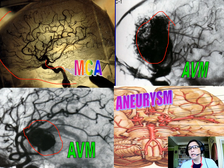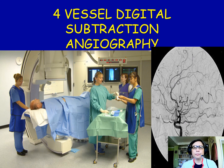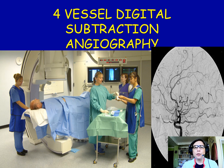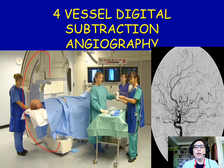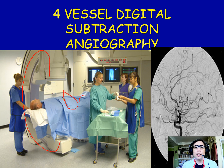Aneurysms are also seen easily on angiograms. This is a picture of a four-vessel digital subtraction angiography. You can see the C-arm here, which can rotate, so you don't have to move the patient — you just rotate the C-arm to get the different views you need. The catheter is inserted through the femoral artery and coursed through the aorta until you access the four vessels, and then you take your images.